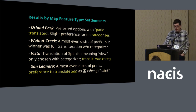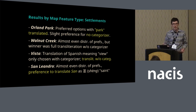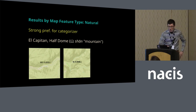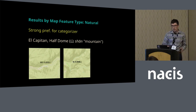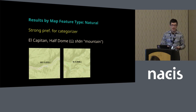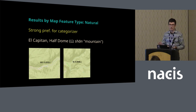With natural features, there's a strong preference to add a categorizing word even when it isn't present in the original label. So with El Capitan and Half Dome, there is a preference to add the categorizer mountain. I also saw this in a pilot survey with islands — people preferred to have island even if the name of the island didn't necessarily contain that.